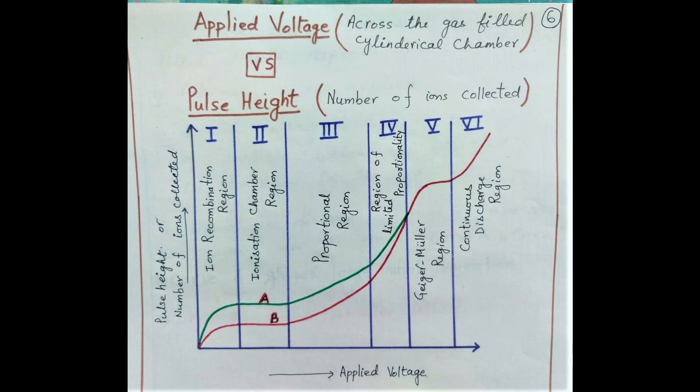Moving to region 4, which is also called the region of limited proportionality — the voltage is further increased and the pulse height increases. At the beginning of this region the two curves A and B can still be seen separately, but as we move towards the end of this region the two curves merge into one. The number of ion pairs created or the pulse height increases in such a way that they are no longer proportional to the initial ionization produced by the incident particle. That is why this is called the region of limited proportionality, and it is not of any practical use.